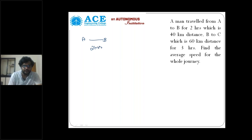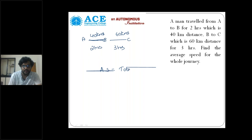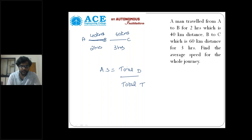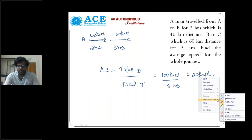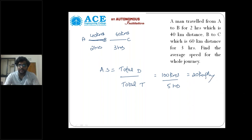A to B takes two hours for 40 kilometers. B to C is 60 kilometers in three hours. Average speed is total distance by total time. Total distance is 40 plus 60 equals 100 kilometers. Total time is 2 plus 3 equals 5 hours. Average speed is 100 divided by 5 equals 20 kilometers per hour.